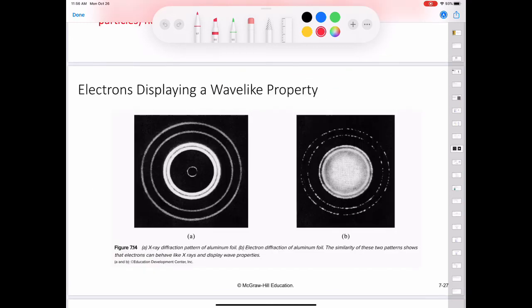Shortly after de Broglie introduced his equation, Clinton Davison and Lester Germer in the United States and G.P. Thompson in England demonstrated that electrons do indeed possess wave-like properties. By directing a beam of electrons through a thin piece of gold foil, Thompson obtained a set of concentric rings on a screen, similar to the pattern observed when x-rays, which are waves, were used.